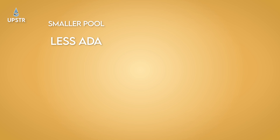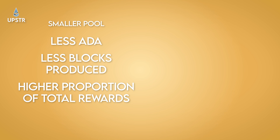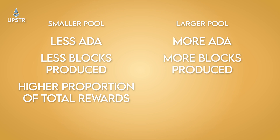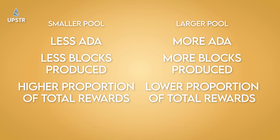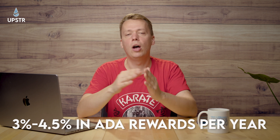You might think that delegating to a pool with more ADA in it would give you more rewards, as that pool is more likely to produce more blocks. But it's not quite as simple as that. If you delegate to a pool with a smaller total delegated ADA, they will produce less blocks over time but you will get a higher proportion of the rewards. Whereas if you delegate to a pool with more total ADA, they produce more blocks but you get a smaller proportion. Overall, if you stake to a pool that is actively producing blocks, you should average 3–4.5% APY in ADA rewards across the year.